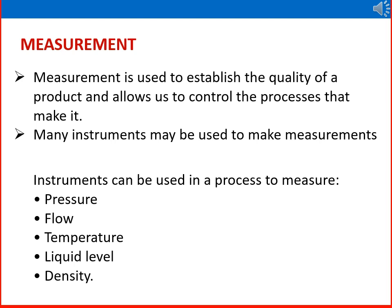Many instruments may be used to make measurements. In a hospital, we measure body temperature — that is a measurement. Room temperature is measured by our AC. In a car, tire pressure measurement is there. These are simple examples of measurement. Instruments in a process can measure pressure, flow, temperature, liquid level, and density.